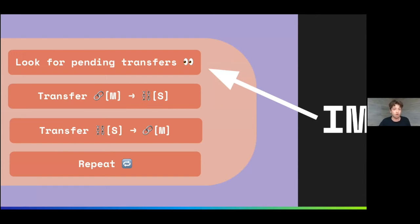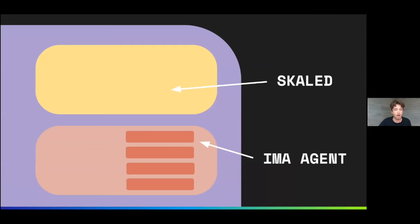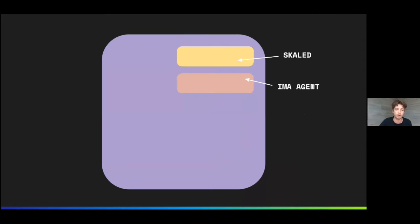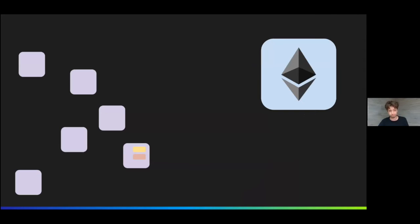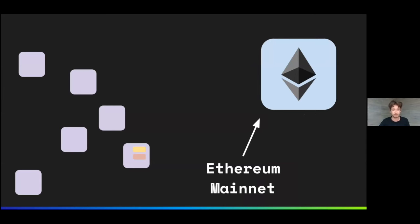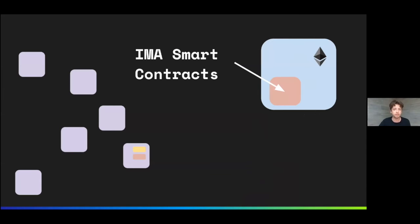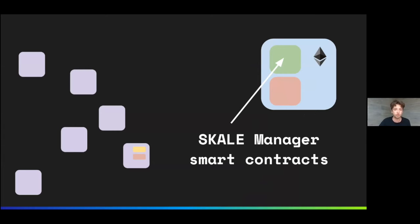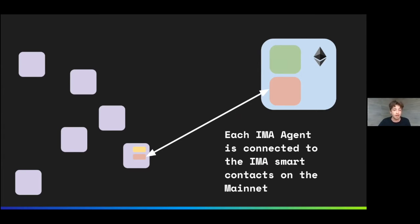Now let's zoom all the way out to see the EZero mainnet part of the project. On the EZero mainnet, we have a set of IMA smart contracts deployed, and also a large set of SKALE manager smart contracts. Each IMA agent is connected to the IMA smart contracts on the mainnet.